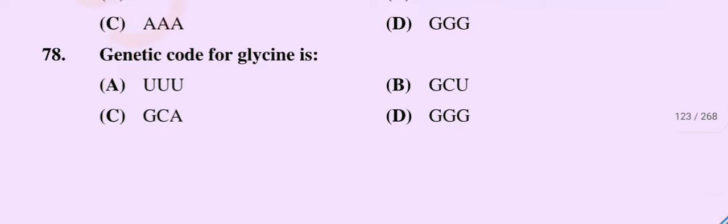Question number 78. The genetic code for glycine is: option A, UUU; option B, GCU; option C, GCA; option D, GGG. The correct option is option D. GGG is the genetic code for glycine.